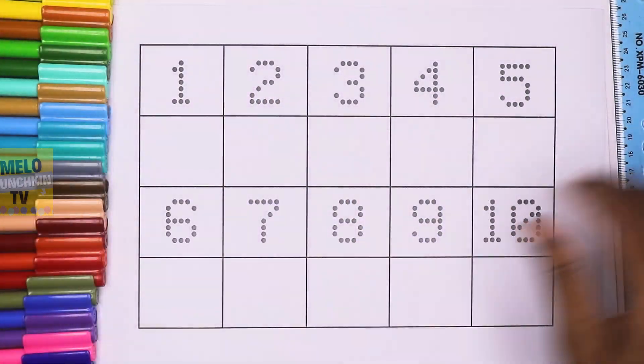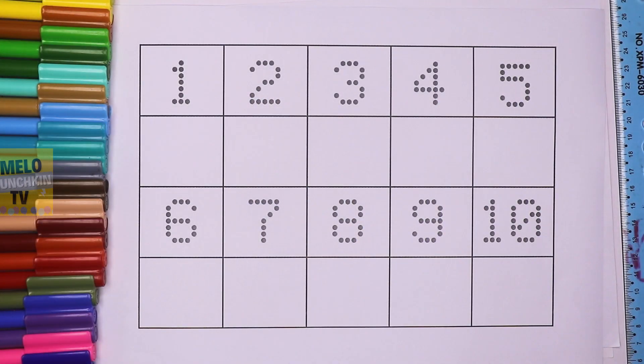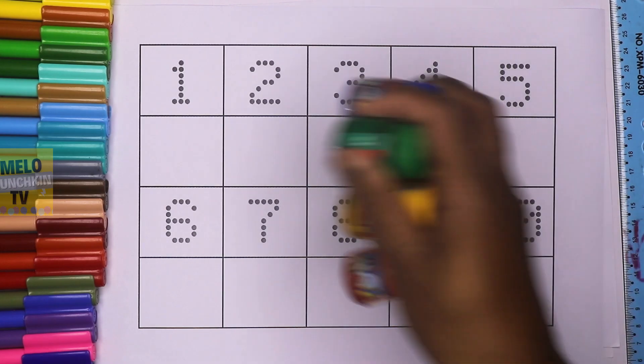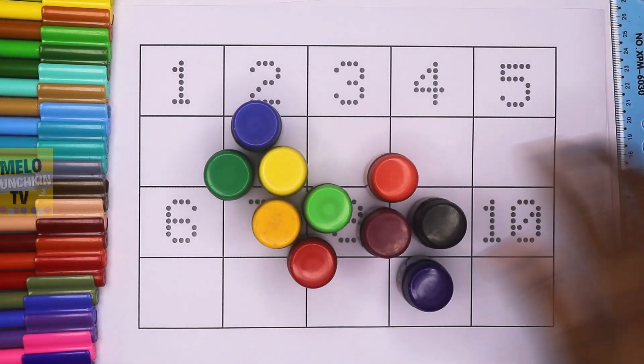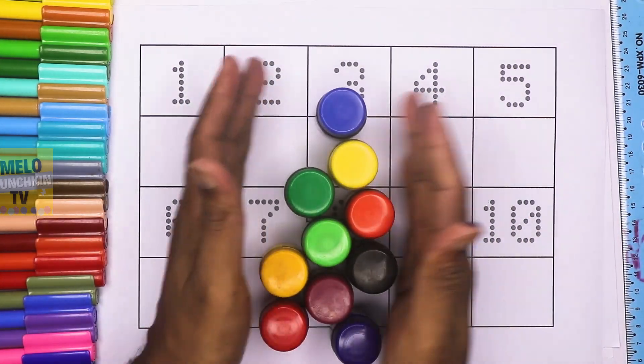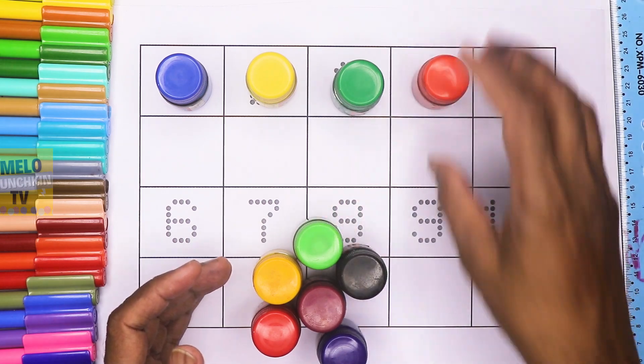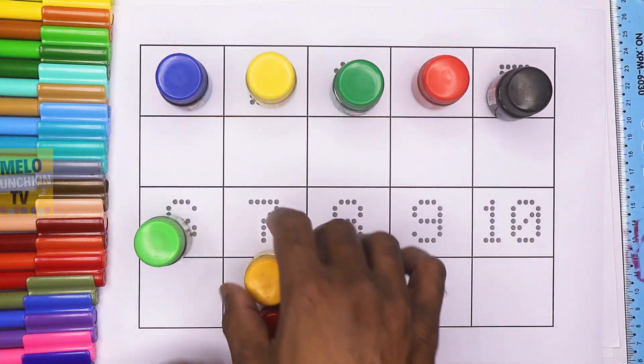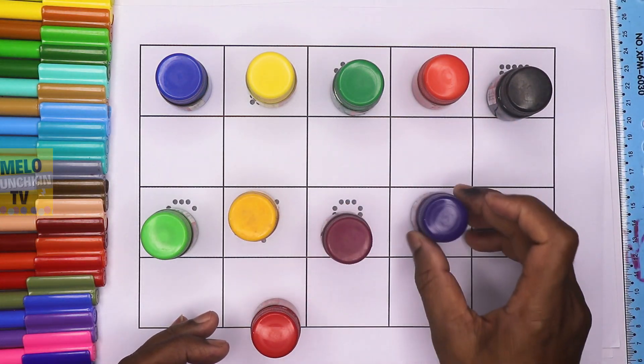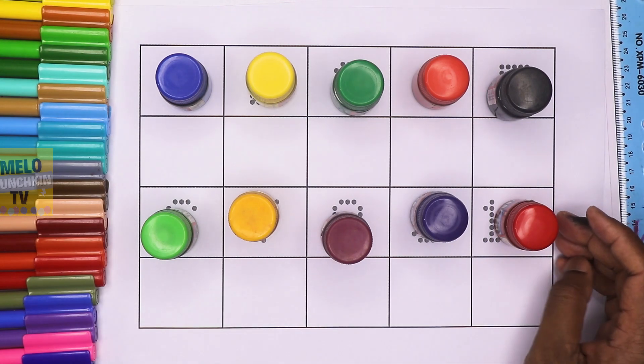Hello kids, today we will learn numbers from 1 to 10. But before that, we will learn colors. So many colors! How many colors? One, two, three, four, five, six, seven, eight, nine, and ten. Ten colors!